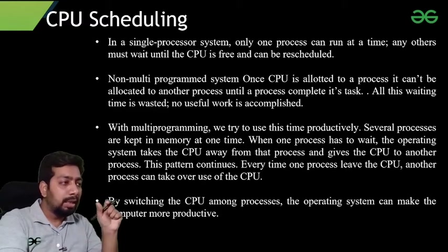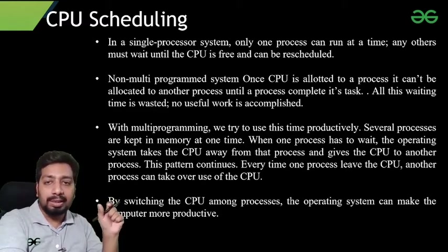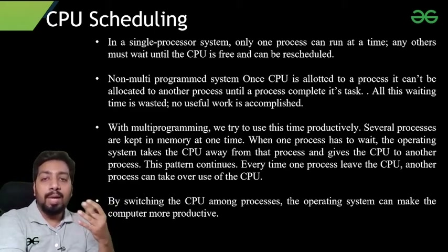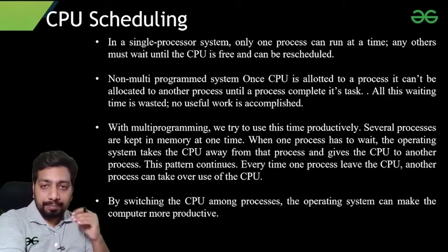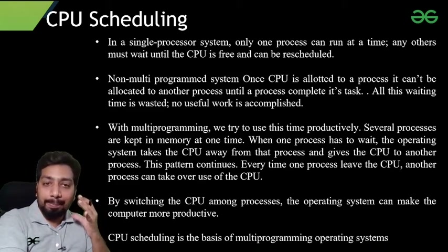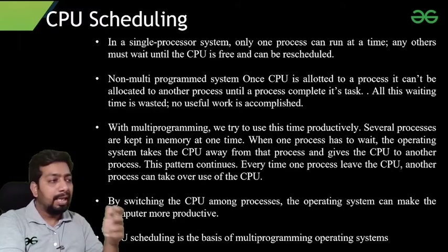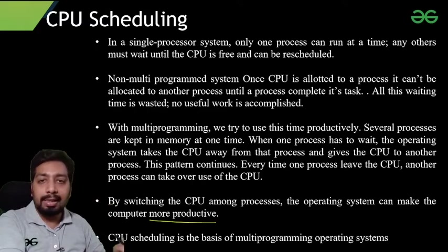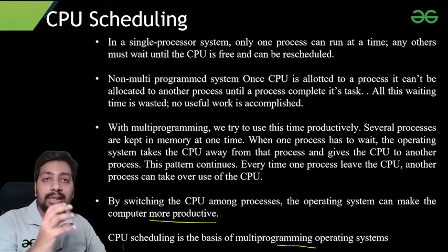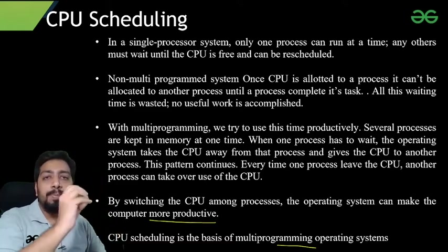By switching the CPU among processes, the operating system can make the computer more productive, because the CPU is never idle. Whenever a process leaves the CPU and goes to the waiting or blocked state, a new process can run. CPU scheduling is the basis of a multiprogramming operating system, and it is closely related to computer system productivity. Let me now explain the same thing with the help of a process state transition diagram.